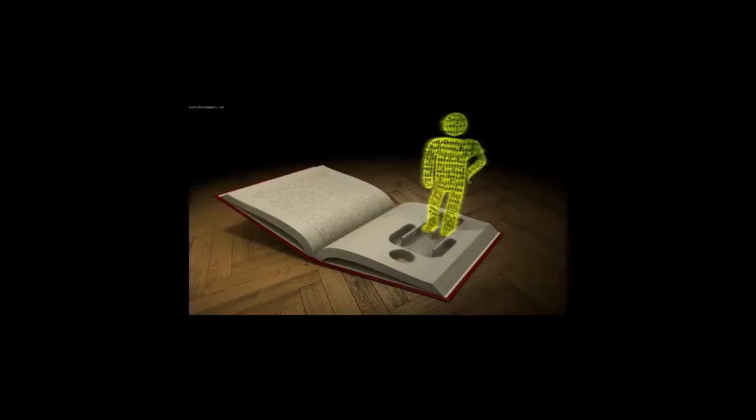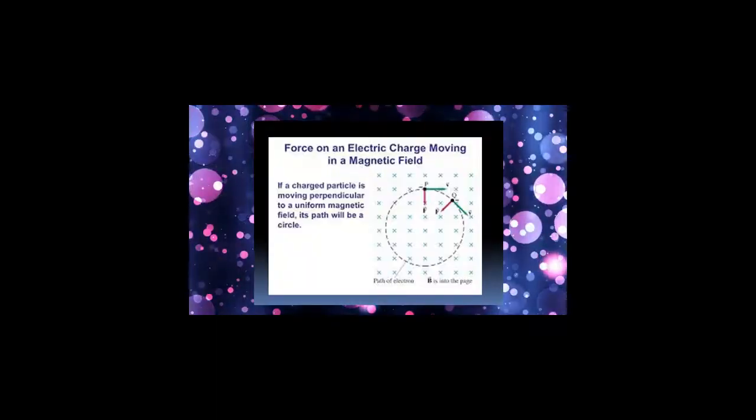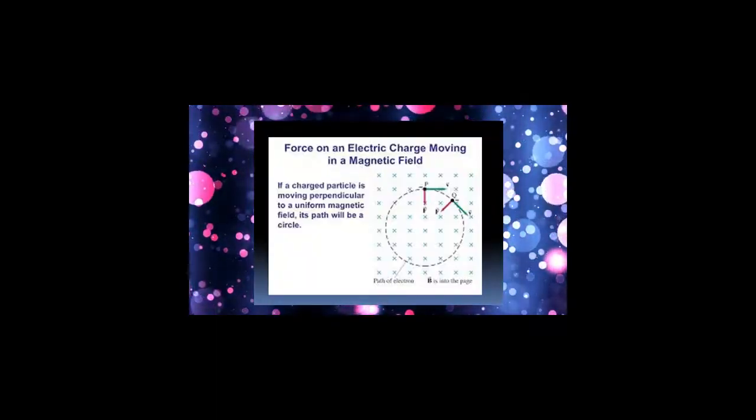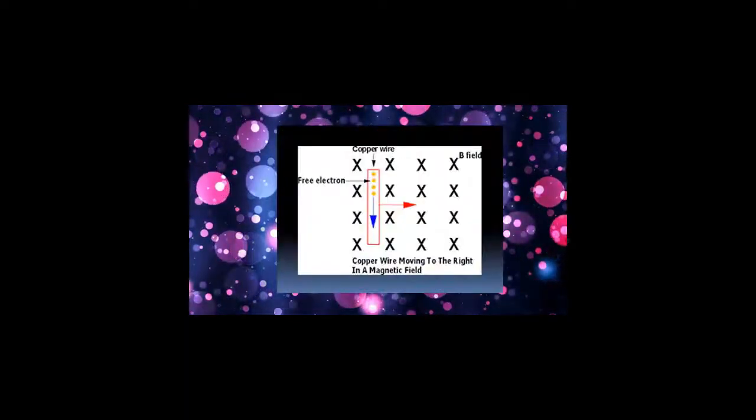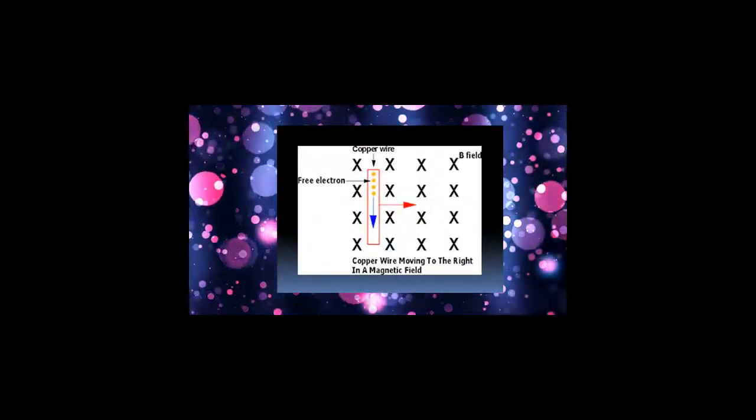Whenever the conductor cuts the magnetic field, it induces EMF, and EMF is the potential. You can see different directions, like the dynamic field. So if you want to get the signal, you can see your device is the same as the magnetic field.